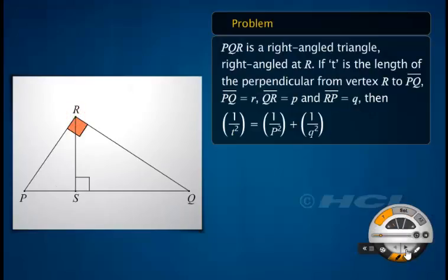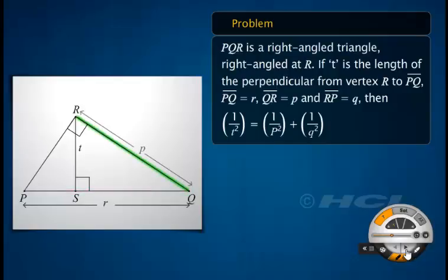A right-angled triangle PQR right-angled at R is given. If T is the length of the perpendicular from vertex R to PQ, and PQ equals R, QR equals P, and RP equals Q, then prove that the reciprocal of the square of T equals the sum of the reciprocals of the squares of P and Q.